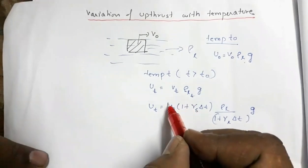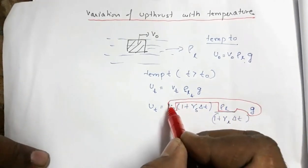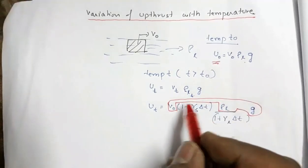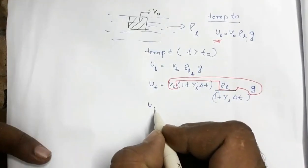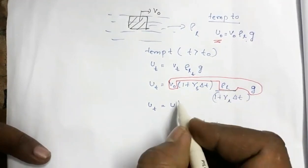Now this quantity, what is this? This is V0. So this can be replaced by UT is equal to, this entire thing is replaced by U0.